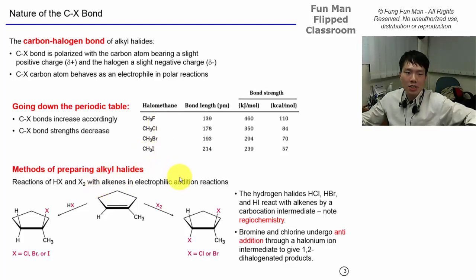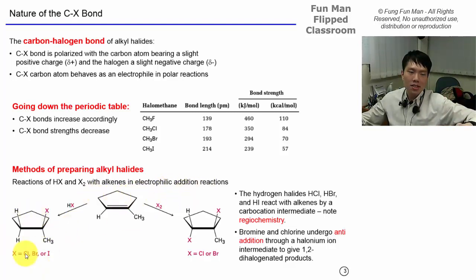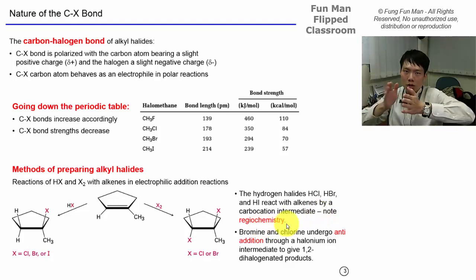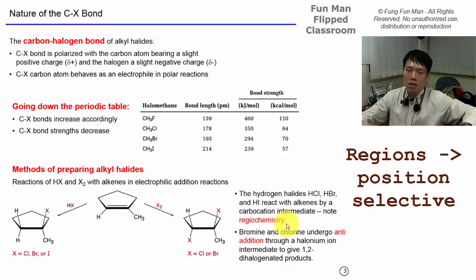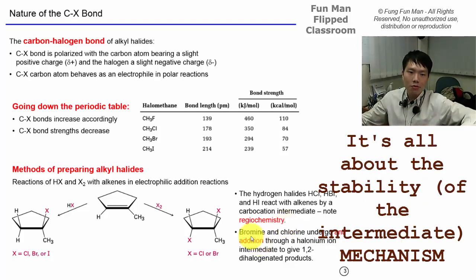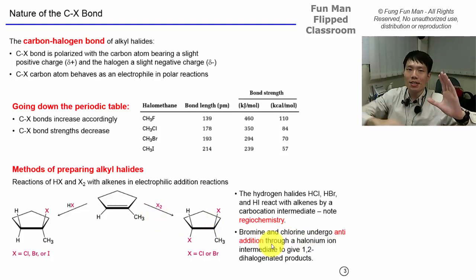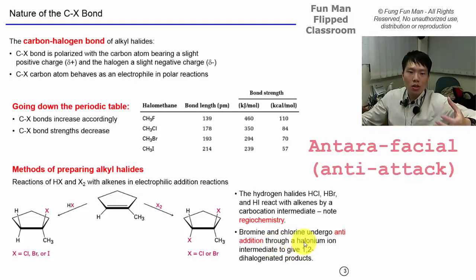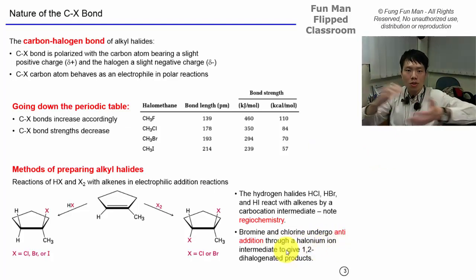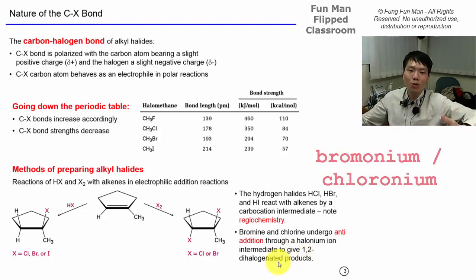To prepare alkyl halides, we can start with an alkene and perform electrophilic addition. There is selectivity here — Markovnikov's rule — meaning the addition goes to a specific position due to the stability of the carbocation intermediate. For bromine and chlorine, using Br₂ or Cl₂, the reaction undergoes anti addition because the halogen attacks from the less-hindered face. This proceeds through a halonium ion intermediate — a bromonium or chloronium ion — to give a 1,2-dihalogenated product.